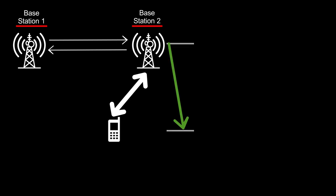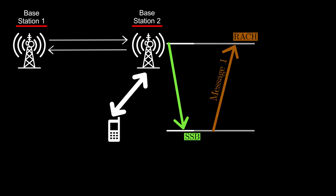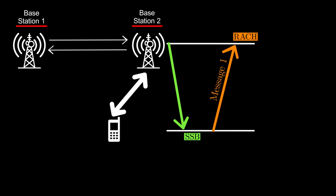After identifying the best beam and its SSBs, UE sends RACH to base station 2, and base station 2 replies to it with a timing advance command. UE adjusts its timing and is declared to be successfully connected to base station 2.